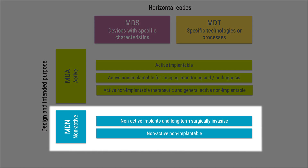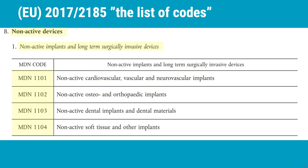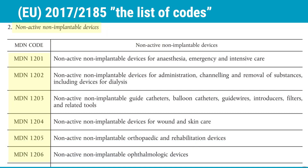Turning to the non-active codes, the MDN, with its two subgroups. The MDN codes start with the group for non-active implants and long-term surgical invasive devices, with four different categories of implants. The other MDN group is non-active non-implantable devices, which has 14 categories in it — here you only see the first six. This is basically where you find the rest of all devices. That was the MDA and the MDN codes.